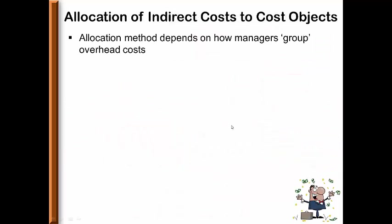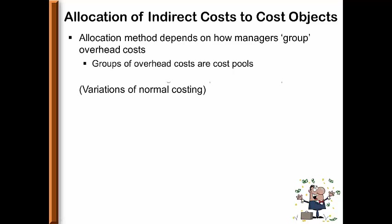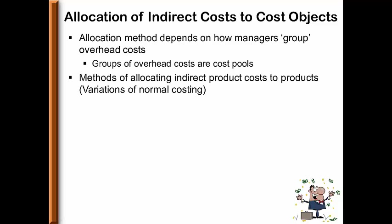The allocation method chosen depends on how managers group overhead cost. Groups of overhead cost are referred to as cost pools, sometimes cost buckets. There are three methods of allocating indirect product costs to products, and these are all variations of normal costing.